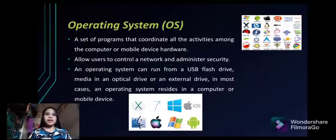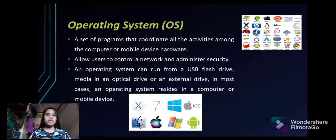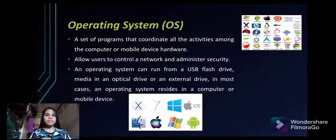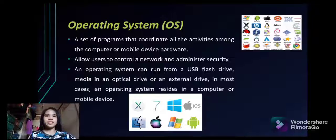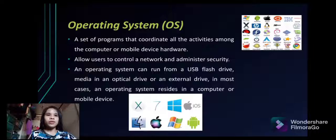What is an operating system? An operating system is a set of programs that coordinate all the activities among the computer or mobile device hardware. It allows users to control a network and administer security. It manages all the hardware, software programs, and applications that a computer or mobile device can run. The operating system is designed to control the hardware of a specific data processing system in order to allow users and application programs to make use of it. An operating system can also run from a USB flash drive, optical drive media, or an external drive. In most cases, an operating system resides in a computer or mobile device.